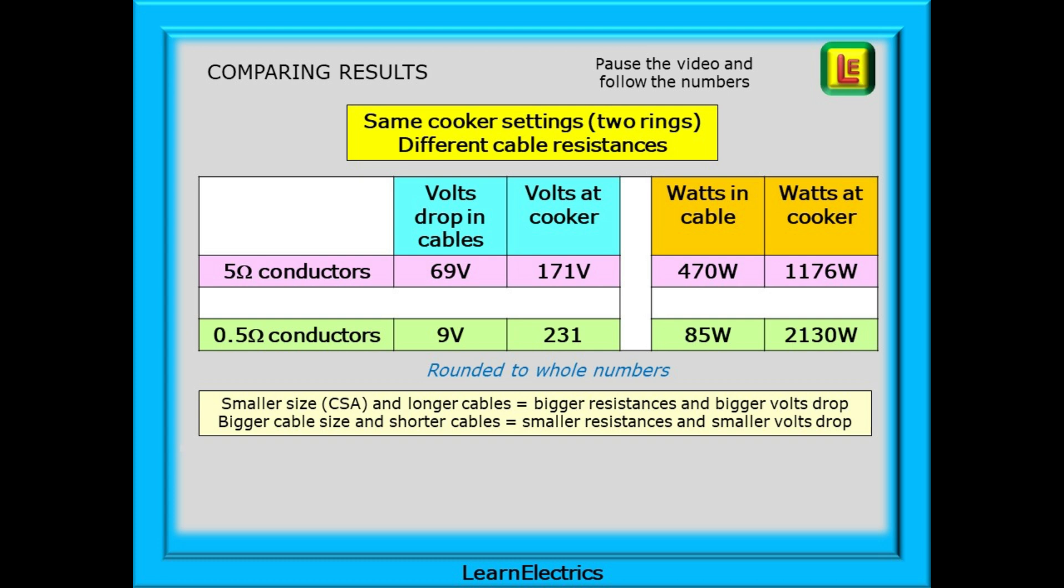Pause the video and look at the differences. This is the same cooker settings with two rings turned on, just different cable resistances. Before we had 35 volts lost in the cable. Now it is less than 5 volts. Before we had just 170 volts at the cooker. Now the cooker has 230 volts available and the power has jumped to a massive 2130 watts at the cooker. Almost all the power in the circuit is at the cooker rings, the elements, just where it should be. This is a much more efficient use of the power available. Lower cable resistances make for smaller voltage drops and more efficient circuits.